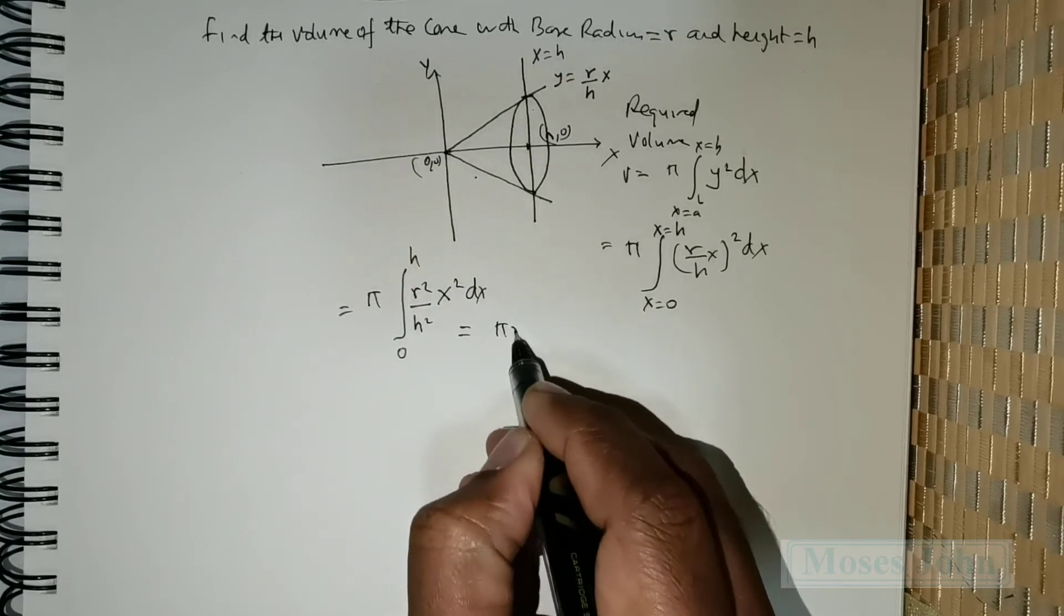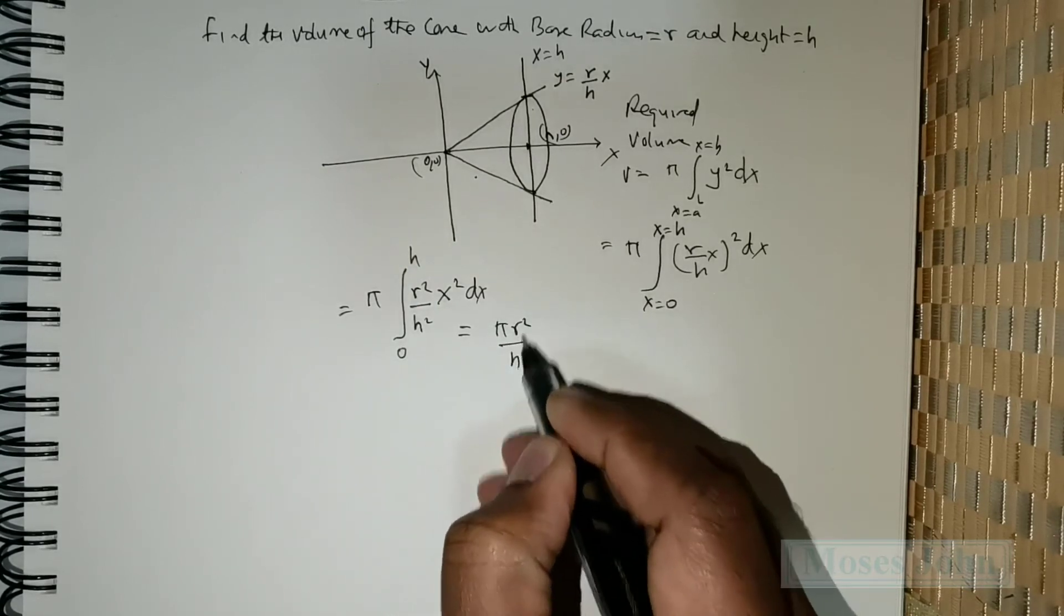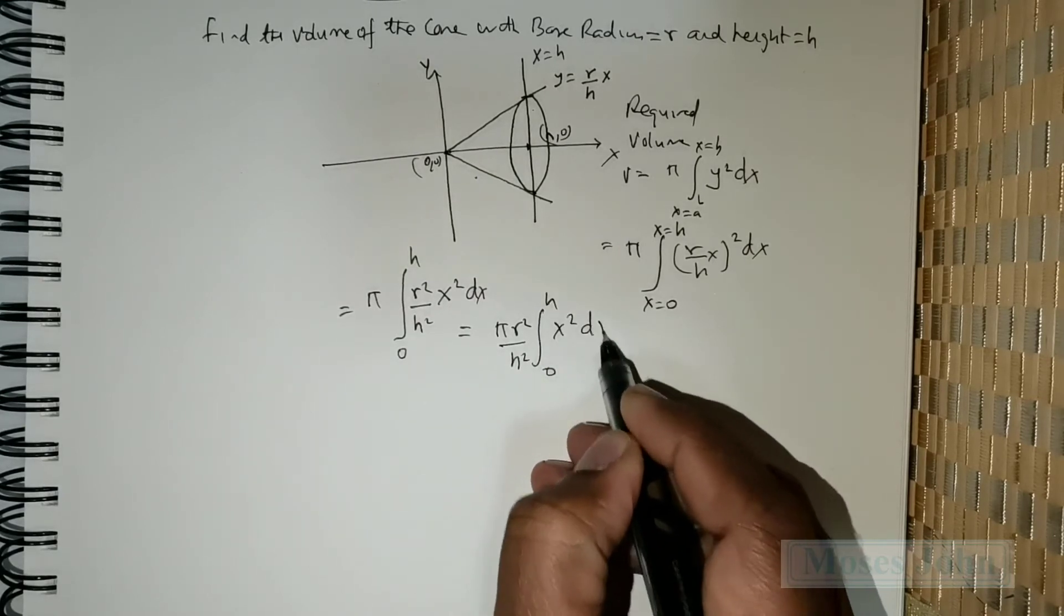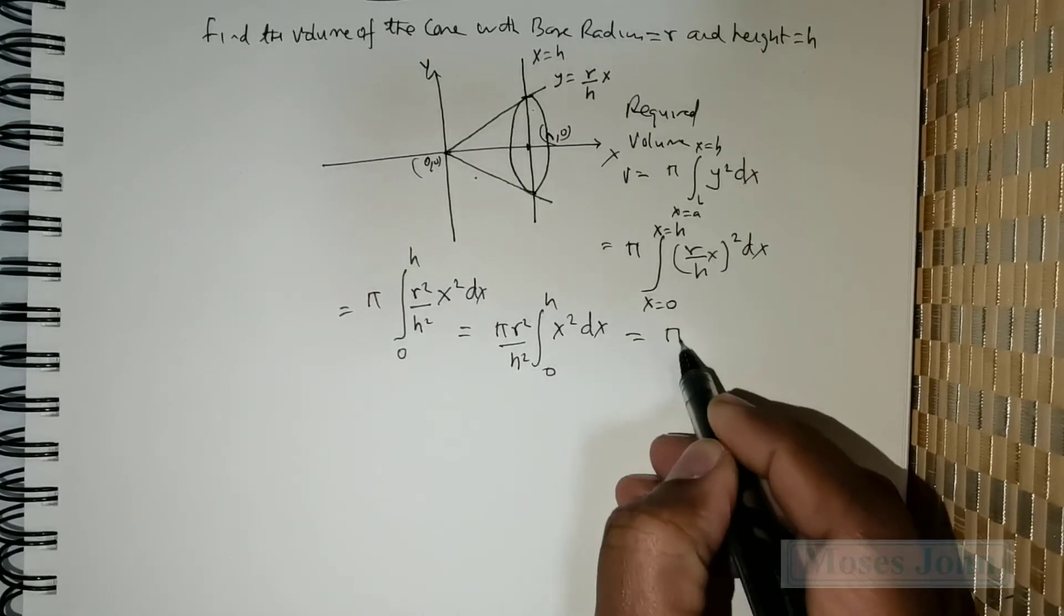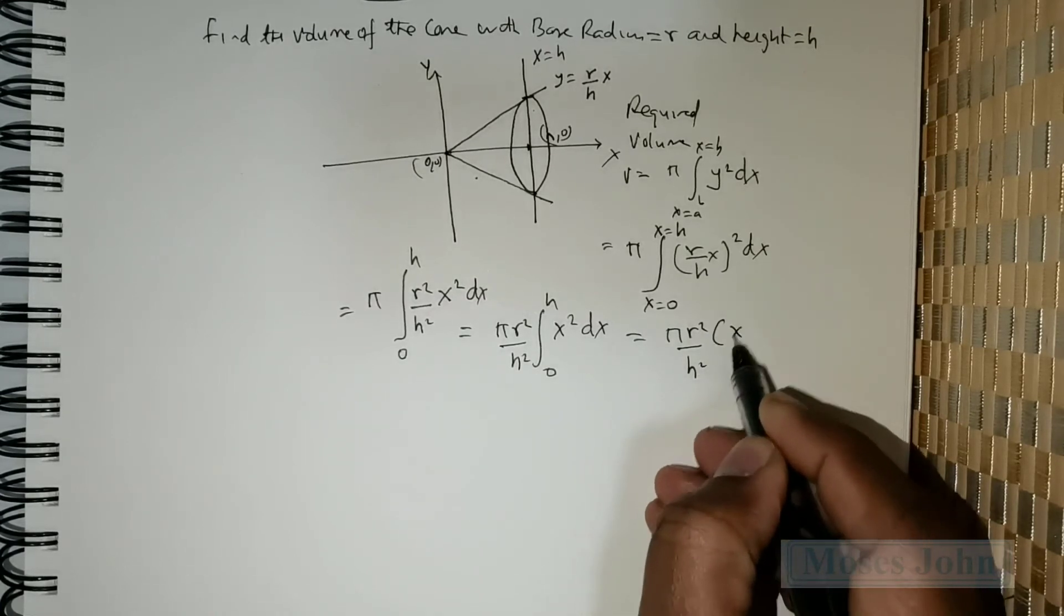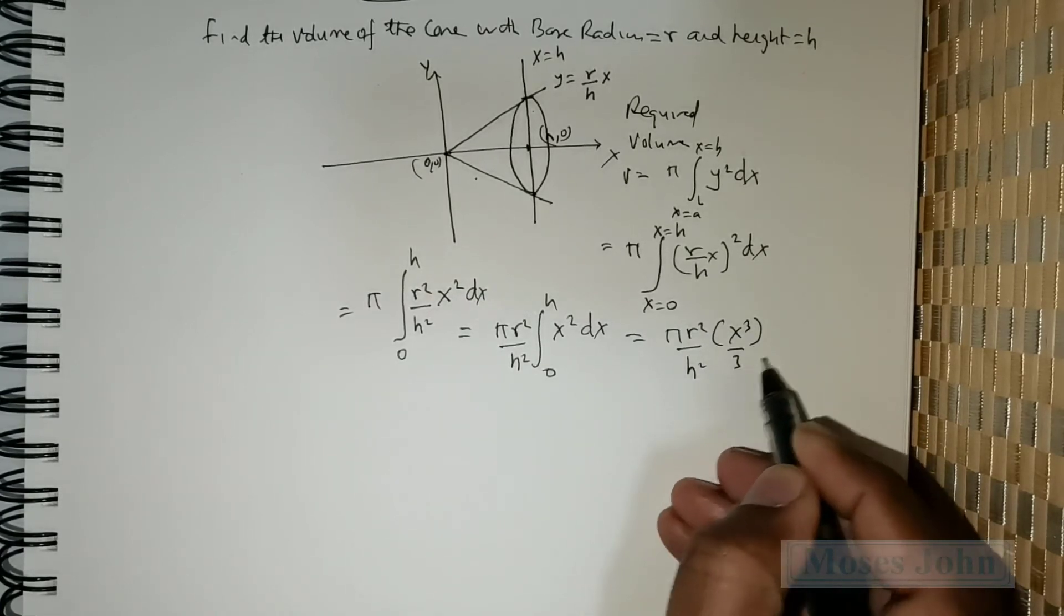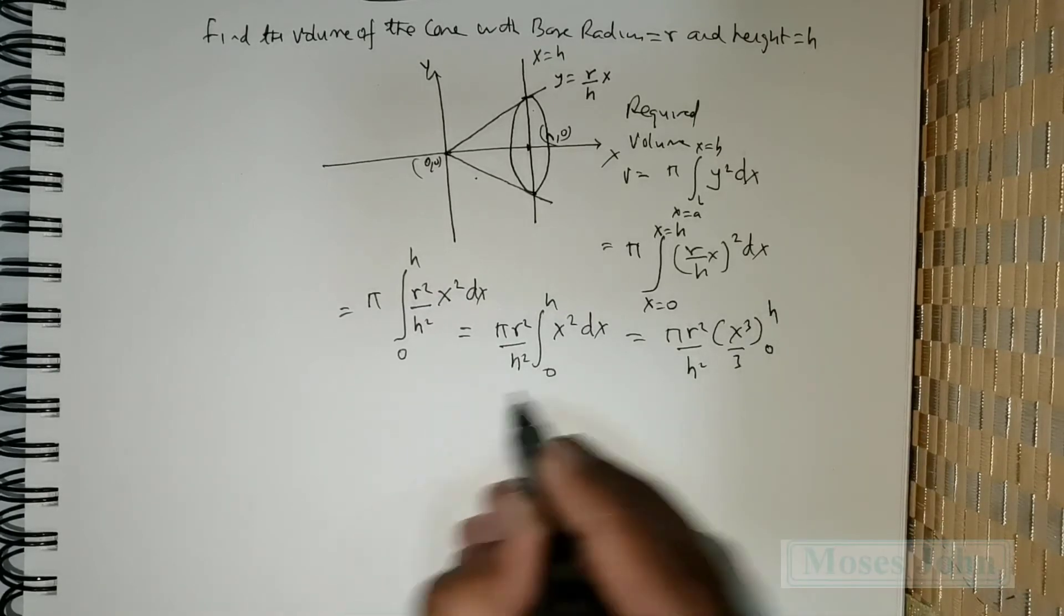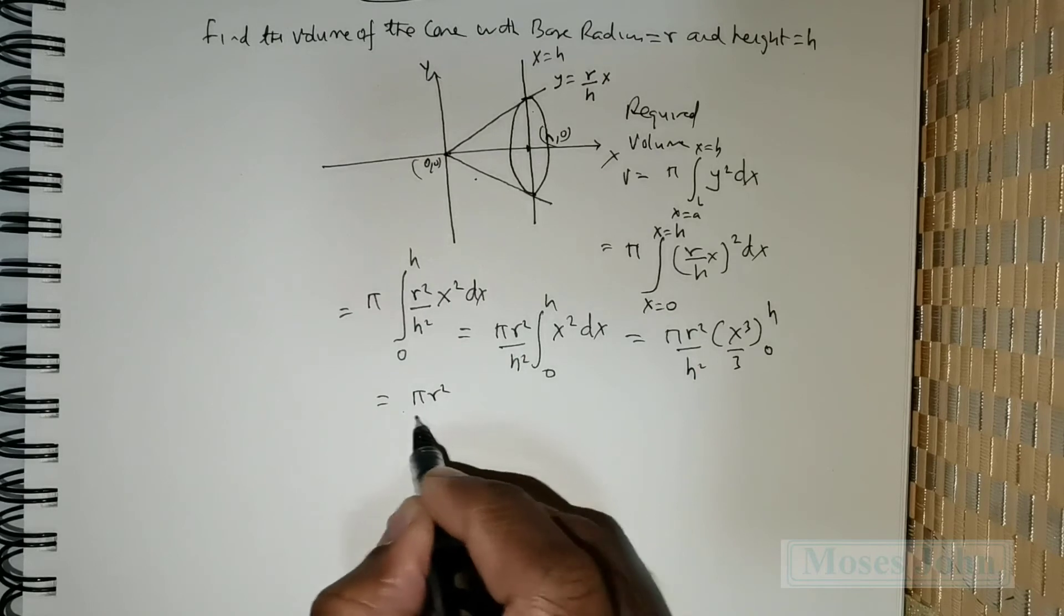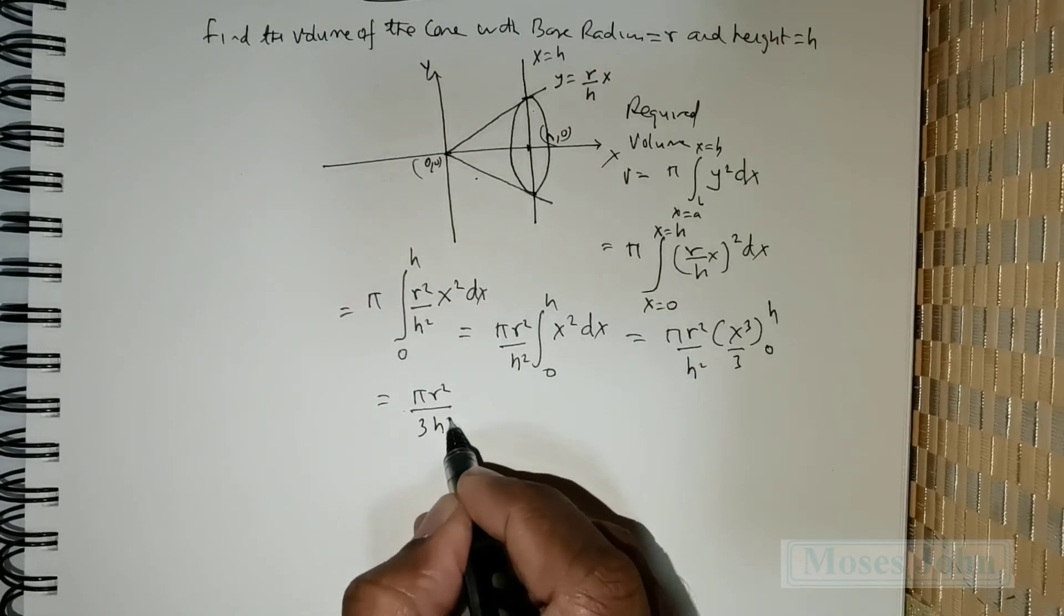Which is pi times r squared over h squared integral 0 to h of x to the power 2 dx. I integrate this. I get pi times r squared divided by h squared times x to the power 3 divided by 3. The limits are 0 to h.